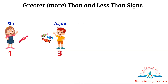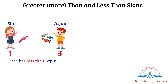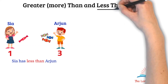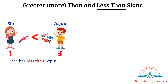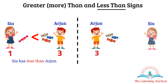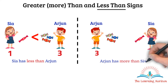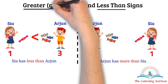Now if we compare the number of candies they have, we can say Sia has less than Arjun. The comparison sign we use to show less than reflects that Arjun has 3 candies and Sia has 1. So we can also say Arjun has more than Sia, and the symbol we use to show more than is the greater than sign.